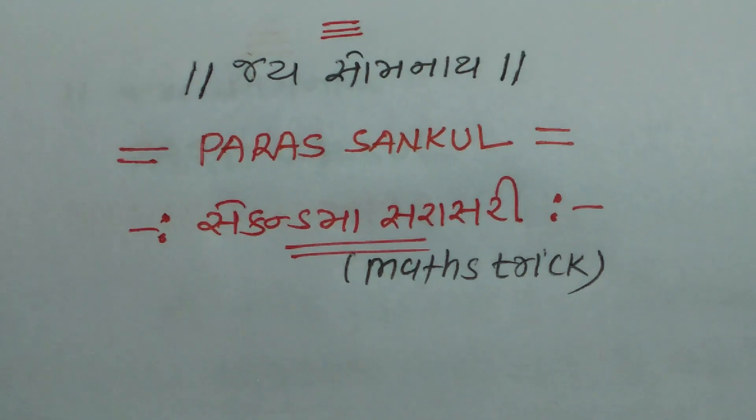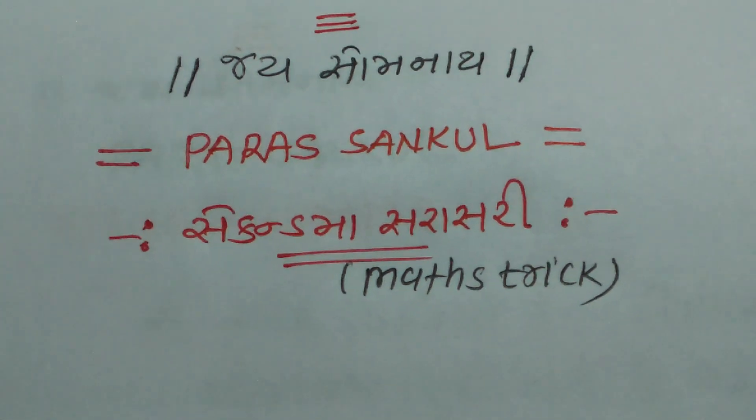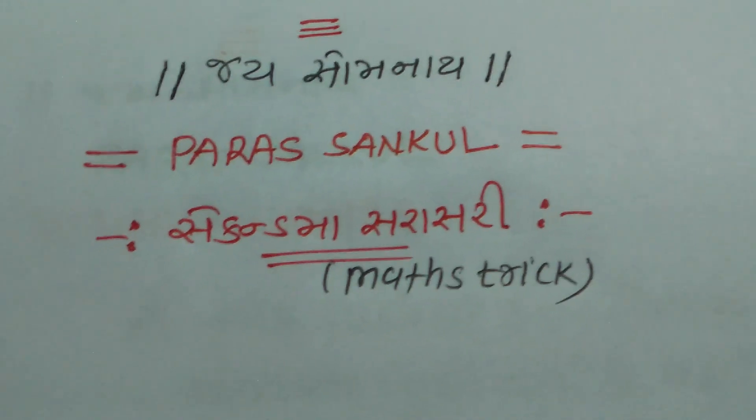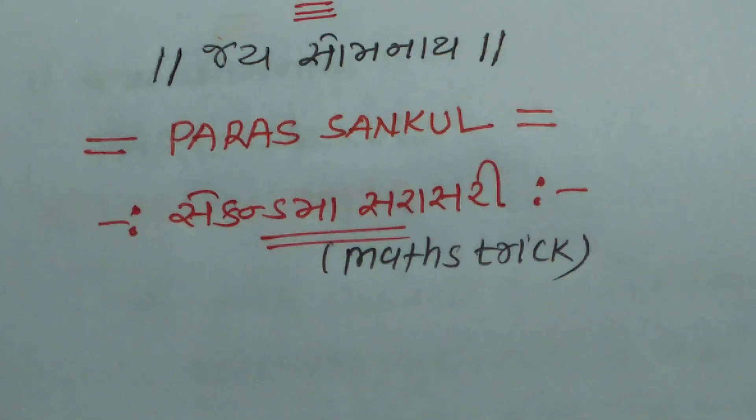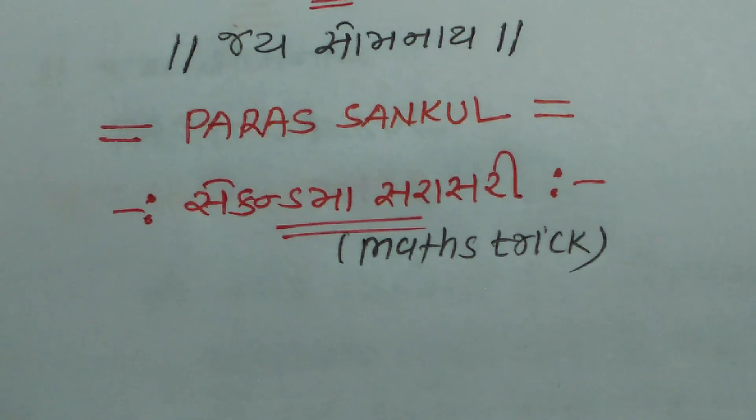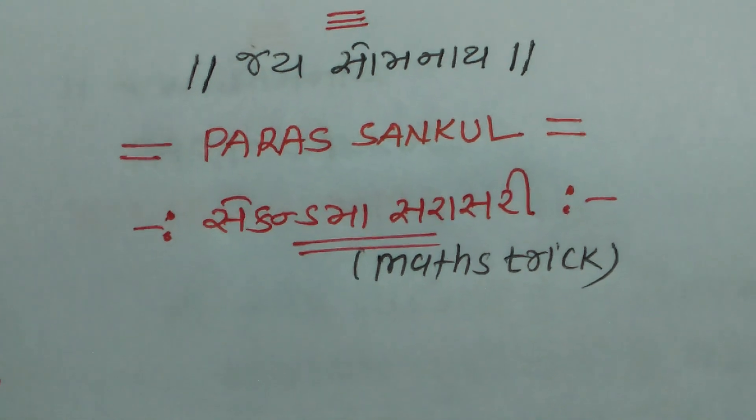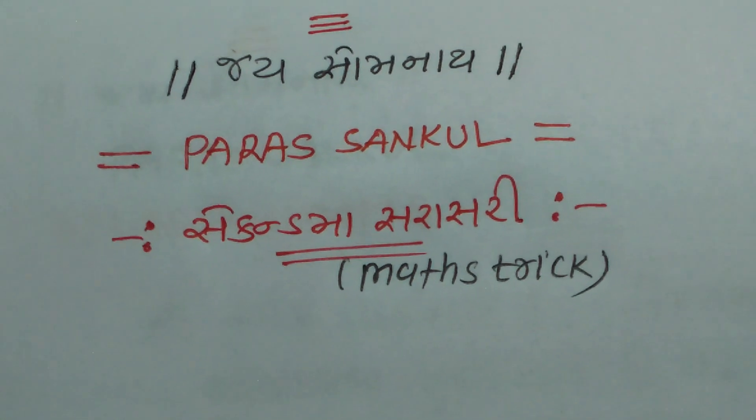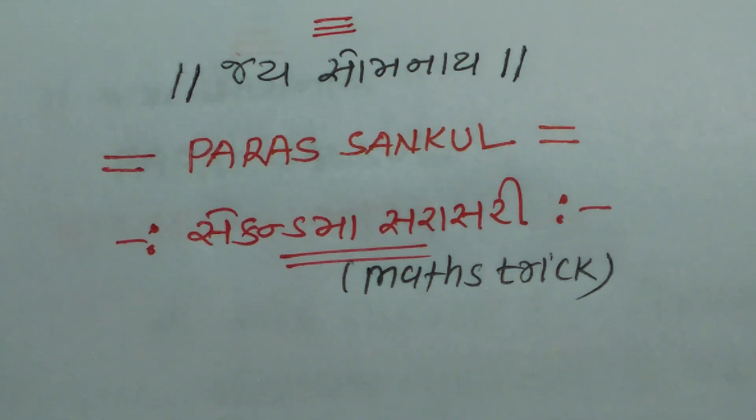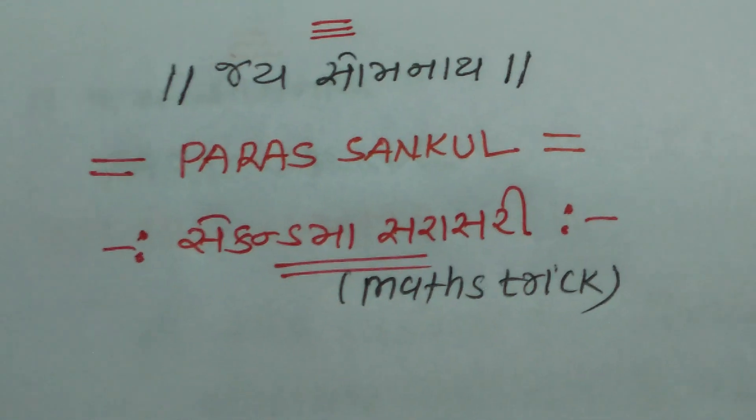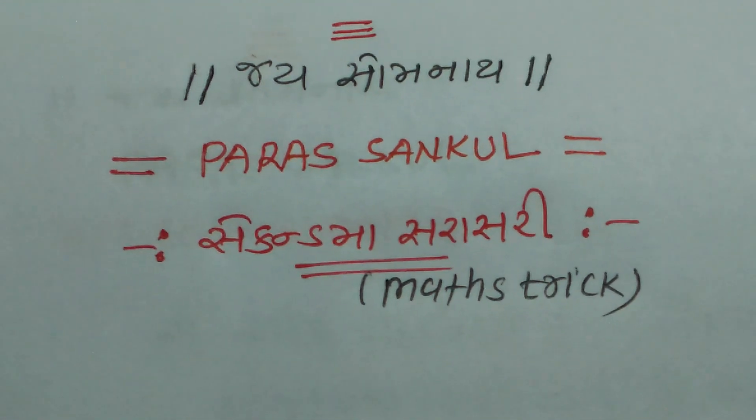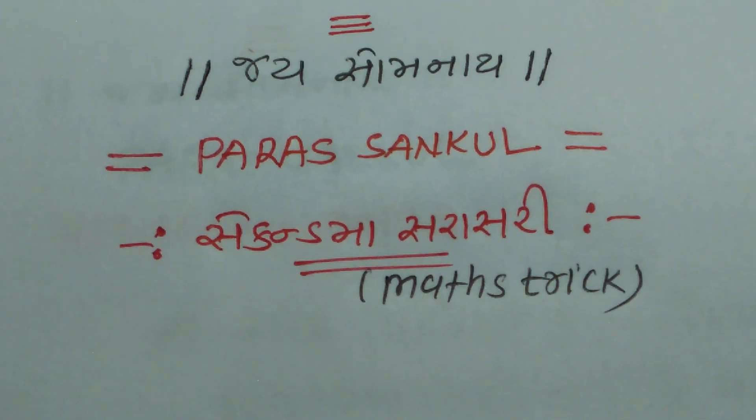Introduction to a maths trick for calculating averages. This is about the 'Paras Sankul' method for finding averages using a shortcut formula.